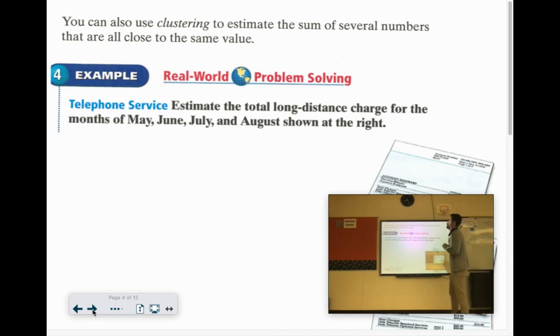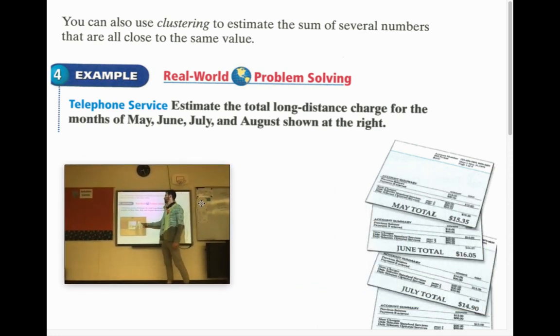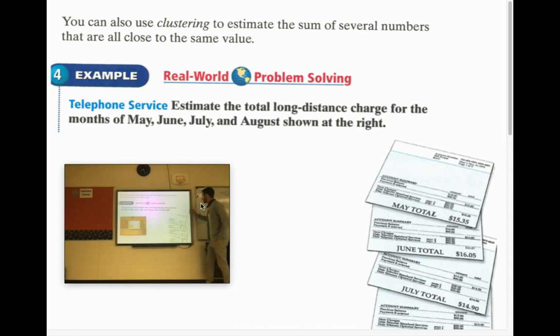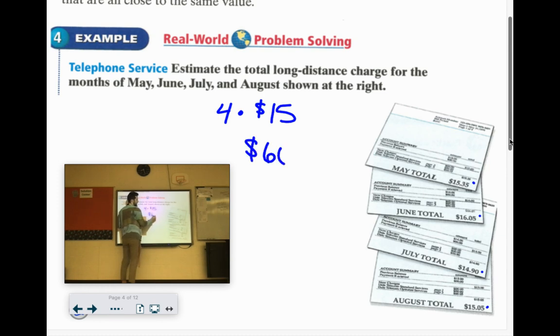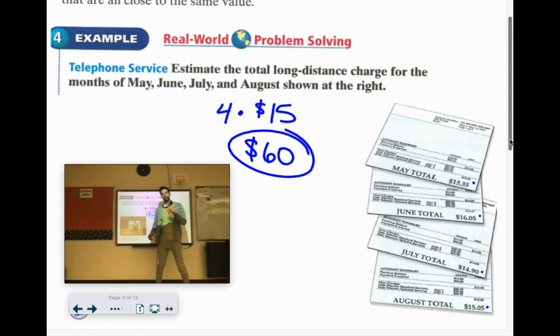This is great. You can use clustering to estimate the sum of several numbers they're all close to the same value. This is awesome. I love front end estimation and I love clustering. Estimate the total long distance charge for the months of May, June, July, and August shown at the right. There are four months here. We could totally add 15.35 plus 16.05 plus 16.05 plus 14.90 plus 15.05, totally. But those all hover really close to around $15. So instead of estimating each one or rounding each one and then getting an estimate together, what you can do is just 4 times. And again they're all hovering around $15. And 4 times 15 is 60.